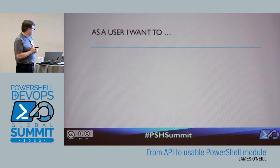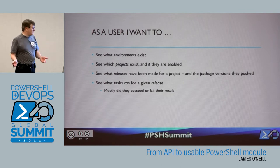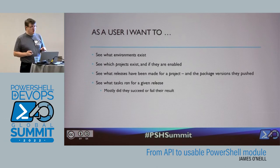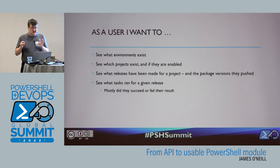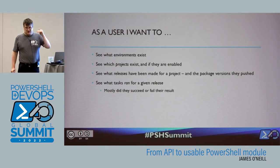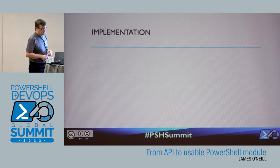When you go to do a deployment, you create a release — a release says 'use these steps currently defined in the project to deploy these versions of the packages into these environments,' and it creates a task for each environment to roll those out. As a user I want to see what environments I've got, what projects exist, whether they've had releases, whether those releases were successful, and what package versions were pushed out. I run a report every few days across about 60 projects and five environments — a matrix showing what version went into each environment and whether tasks succeeded.